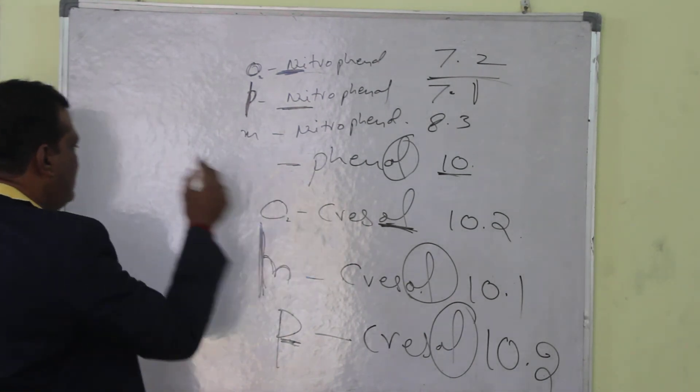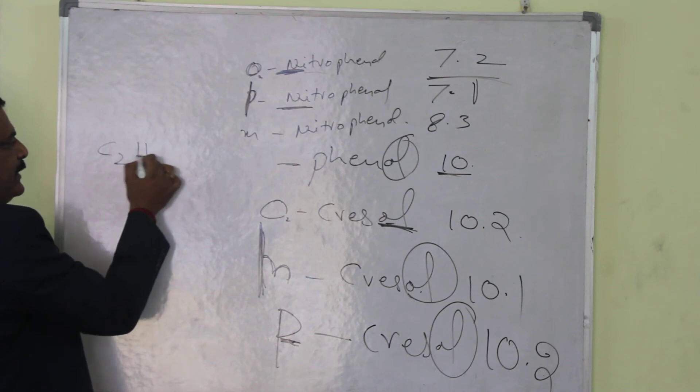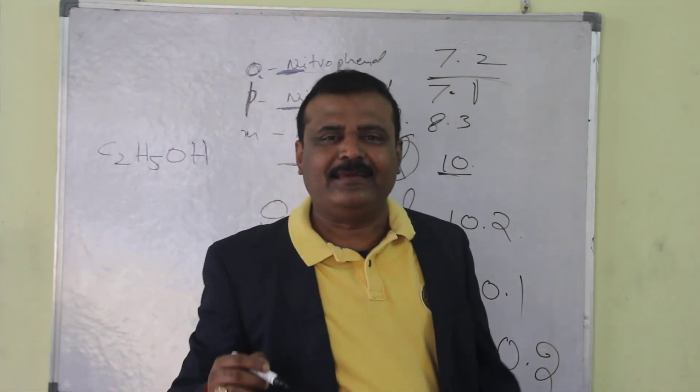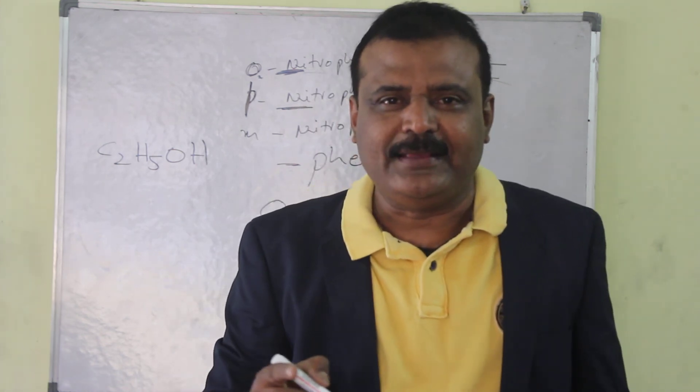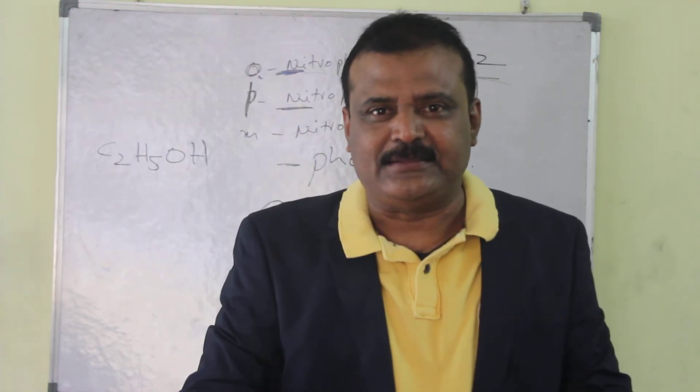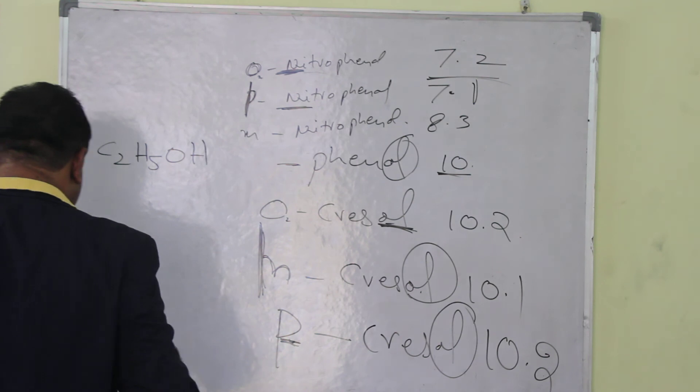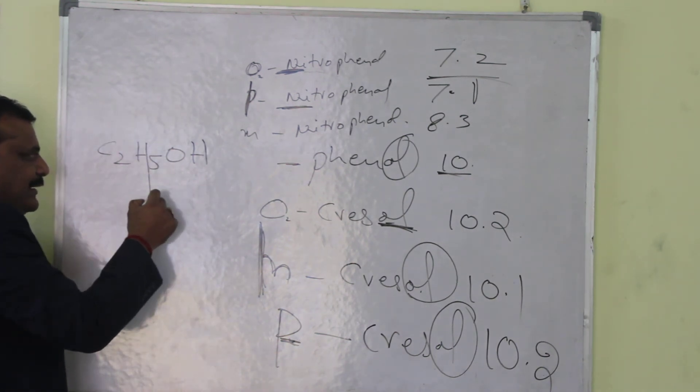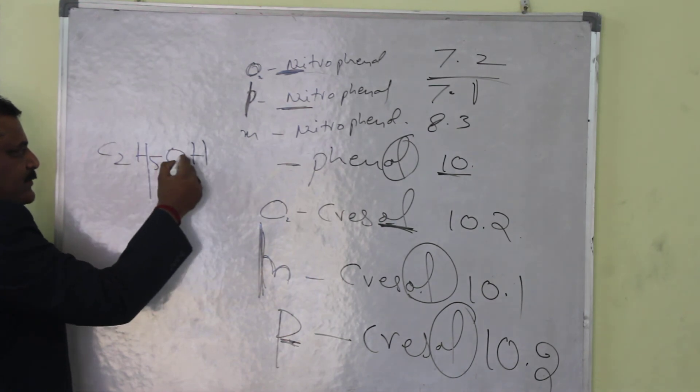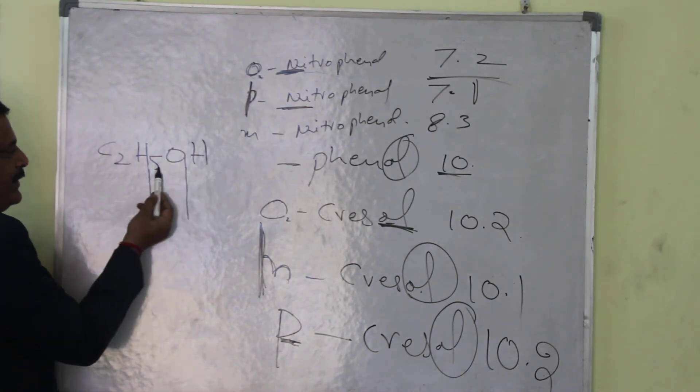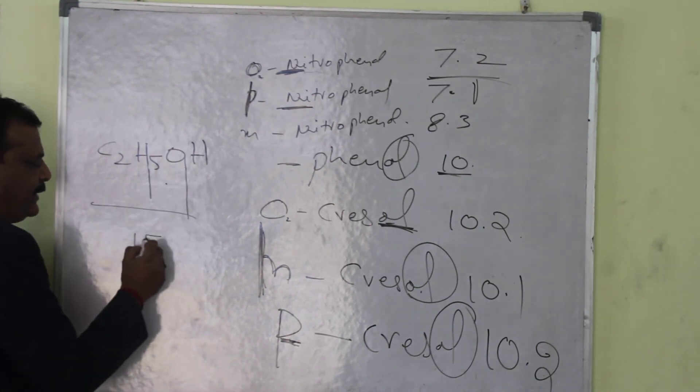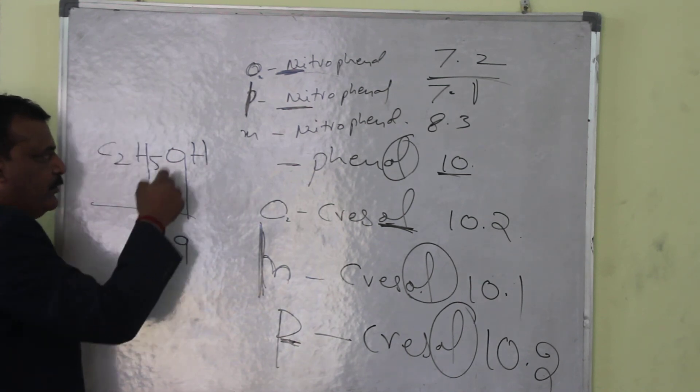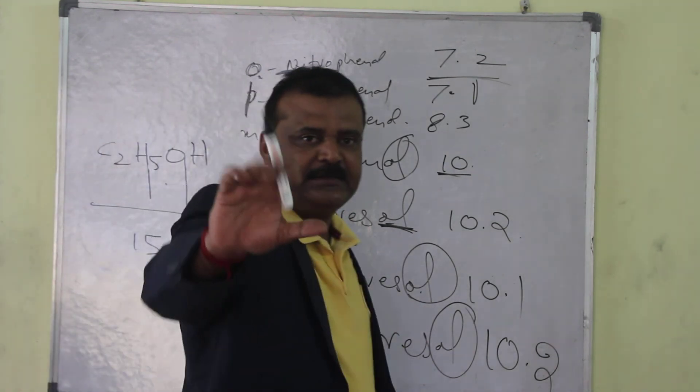We have last and final, that is ethanol, C2H5OH. The magical trick in case of ethanol is 2 straight lines. Look at this one. I have extended this one like this, and this one like this. 15.9. The pKa value for C2H5OH is 15.9. 2 straight lines, that's it.